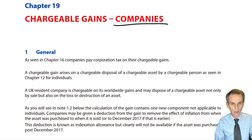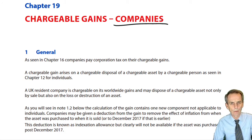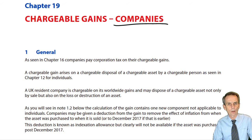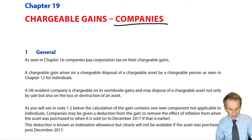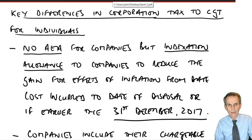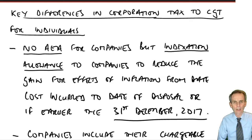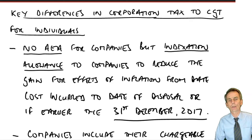That is one of just a handful of essentially important differences from what you already know of the taxation of individuals to CGT. And what we're about to see in the next three chapters — 19, 20, and 21 — as we look at the taxation of those chargeable gains for companies.